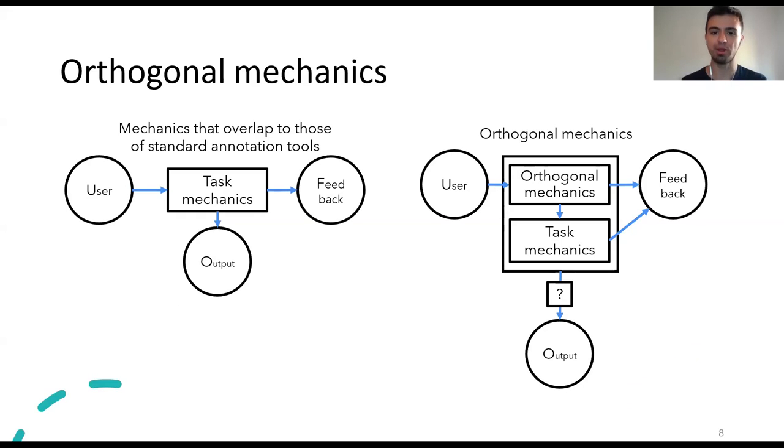Here is a brief summary of the main differences between games that do not employ orthogonal mechanics on the left versus games that do employ orthogonal mechanics on the right. In the first case, users interact with some task mechanics that produce an output, the annotations and the feedback points, the leaderboards and so on.